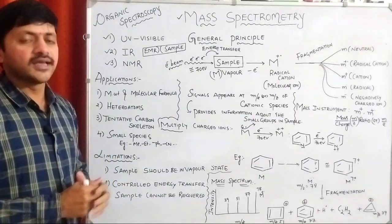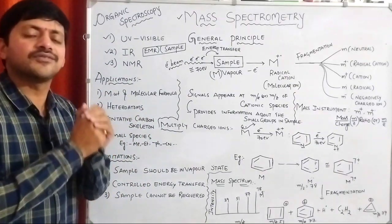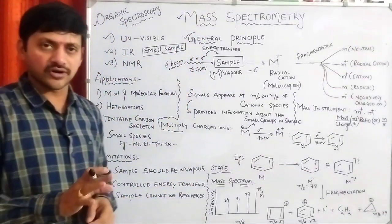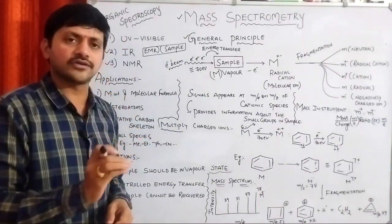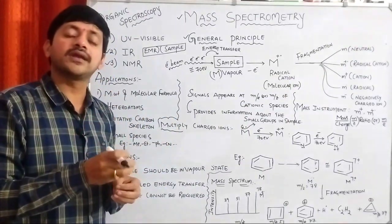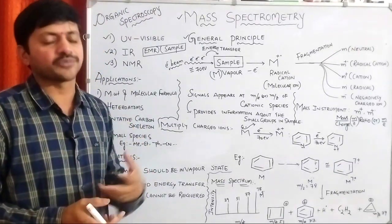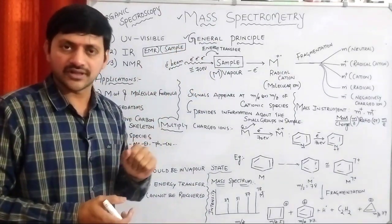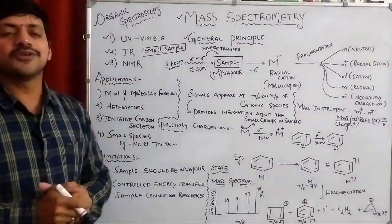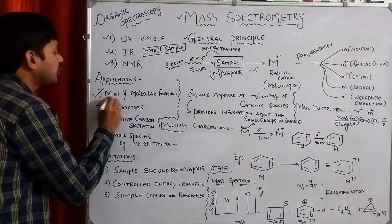For any spectroscopic or spectrometric technique, the first and fundamental point is the general principle. The principle is very important for each and every spectroscopic and spectrometric technique. When you have knowledge of the basic principle, only then will you be able to understand the different concepts in that area. Let's see the general principle of mass spectrometry. The main aim of mass spectrometry is to determine the molecular weight and molecular formula of an organic compound.